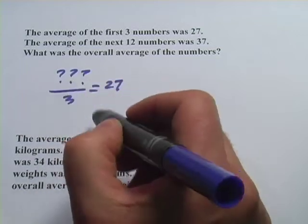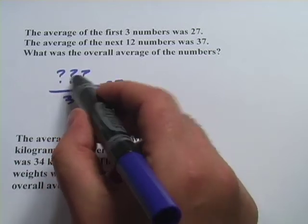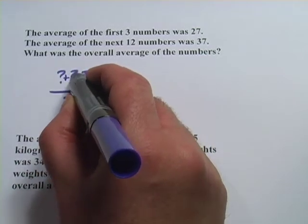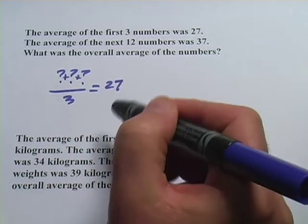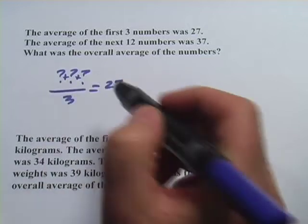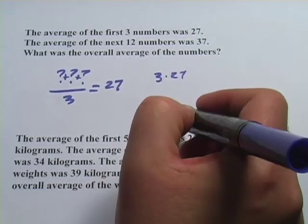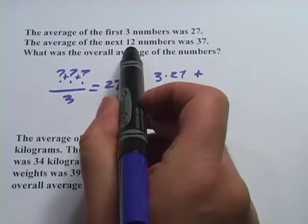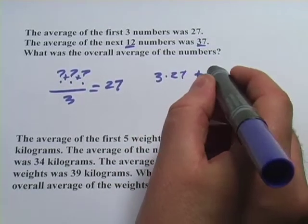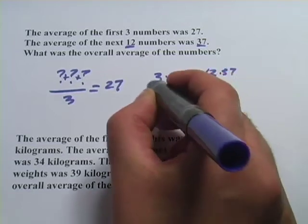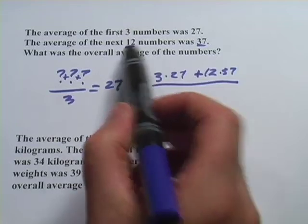One number that would work for all of these is 27. If I had 27 plus 27 plus 27 divided by three, that would be 27. The average of 27s is 27. So I'll just use that as a placeholder in my head. And instead of adding them all together, I know there are three of them. So that chunk would be three times 27. And the other chunk would be 12 numbers whose average is 37. I'll just say they were all 37s. So 12 times 37, and that's going to be divided by the total number of numbers. There were three and 12, so that's 15.